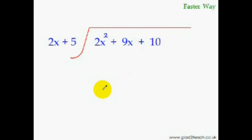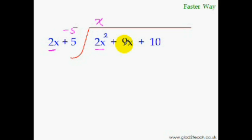Let's end this video on a happy note — do this last question. Dividing the first term by the first term, we get X — that is the first term of the answer. Put minus 5 here, multiply minus 5 with X, and add it to the next term of the dividend. Before you put down the answer, divide by the coefficient 2. Minus 5 times X is minus 5X. Minus 5X plus 9X is plus 4X. Plus 4 divided by 2 is plus 2. So we put plus 2 here — question solved.